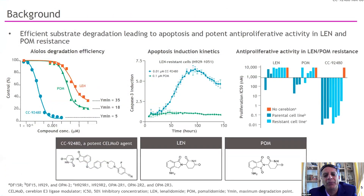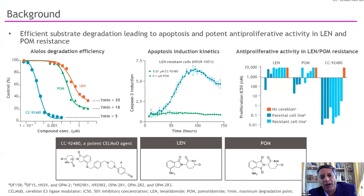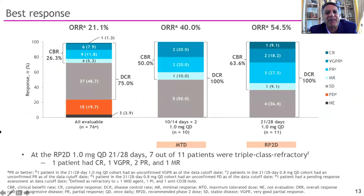There's one other CELMoD you may have heard about recently — a drug called CC-92480, which we'll call 480 for short. It doesn't even have a name yet. In terms of its ability to induce targeting of Aiolos and Ikaros, it's much more potent than either pomalidomide or lenalidomide and kills myeloma cells far more effectively. Structurally it is different even from iberdomide.